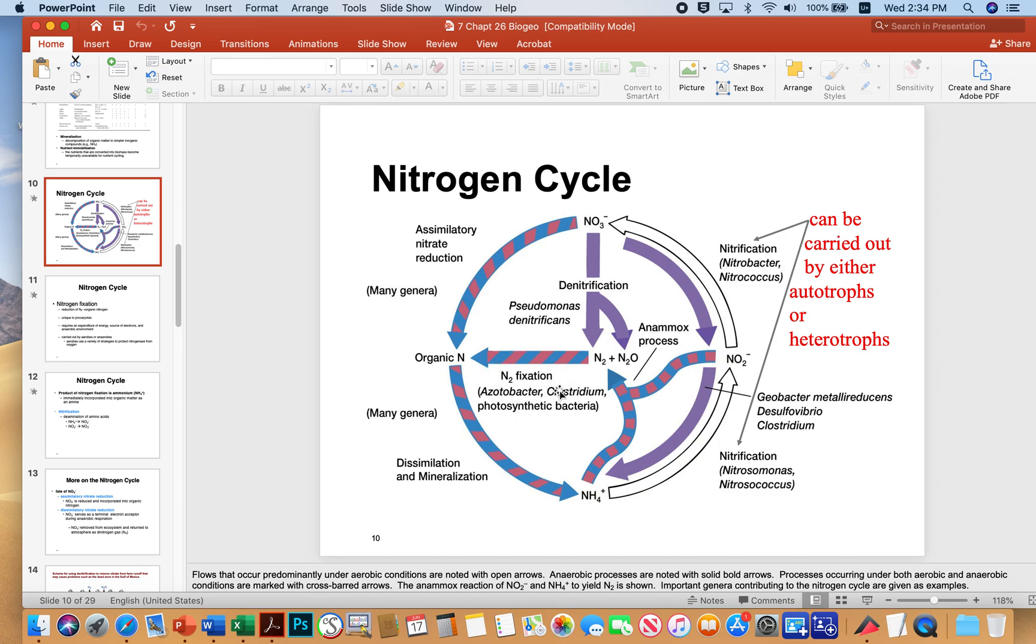Azotobacter species, clostridium species, some photosynthetic bacteria can actually fix nitrogen, where they grab this N triple bond N molecule and can fix it into organic nitrogen and tissue, which is a hugely important process.